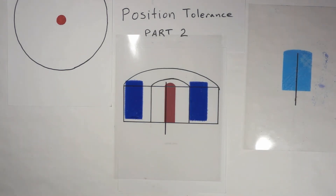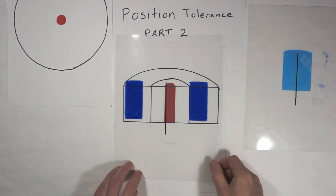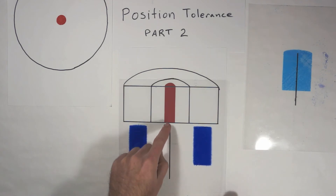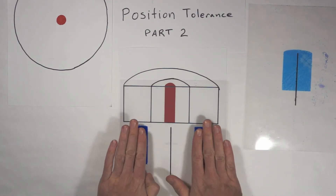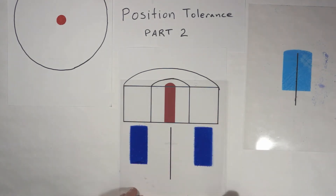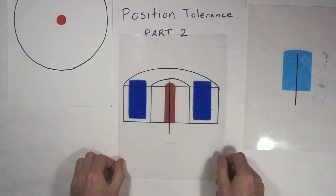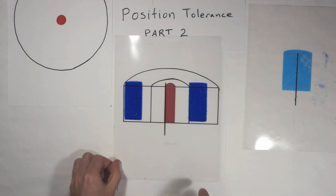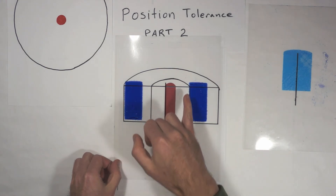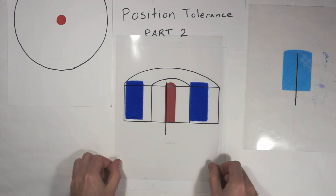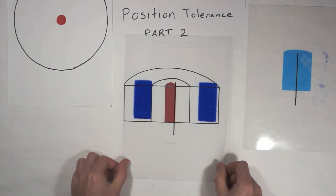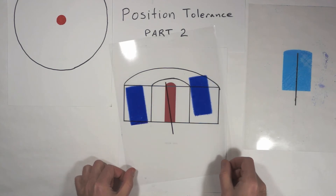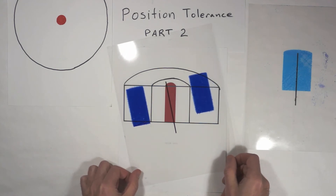Here's my attempt at illustrating that for the hole. This line is the center line of my hole — that's the best illustration I can do. Let's put that center line all the way to one side, and we don't violate this virtual boundary.